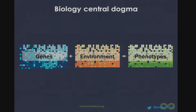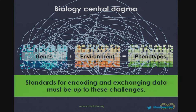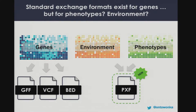Getting back to the central biology dogma — genes plus environment equals phenotypes — we all know it's not really that simple. One of the issues in integrating these data is that the standards for representing genes, environment, and phenotypes are not all that great. We're doing better with genes, but not doing well with environment or phenotypes, and we're only scratching the surface trying to describe all those complex interactions. The standards for encoding and exchanging data computationally must be up to the challenge — we have formats for sequence data, but not for environment or phenotype data exchange.